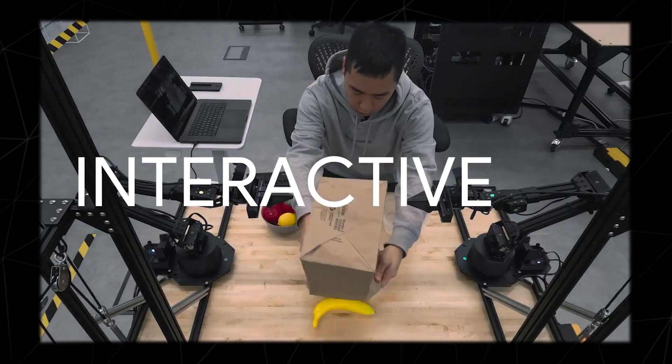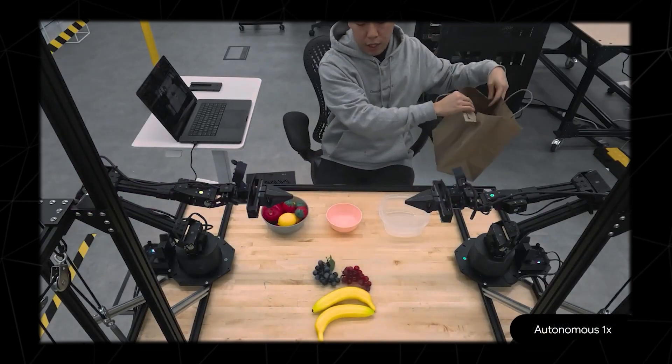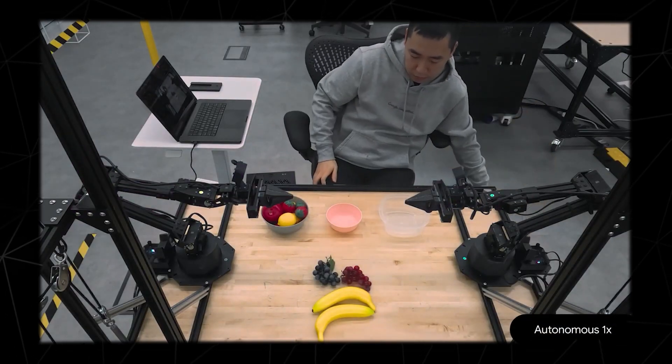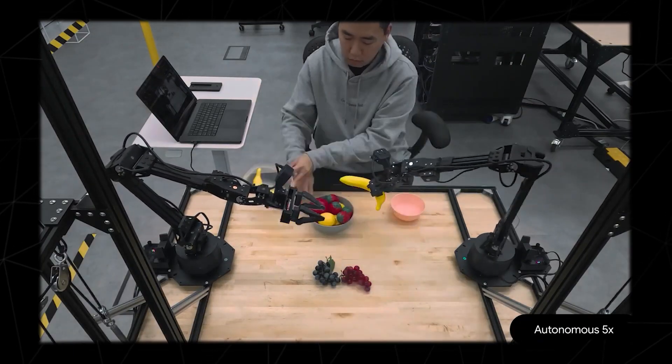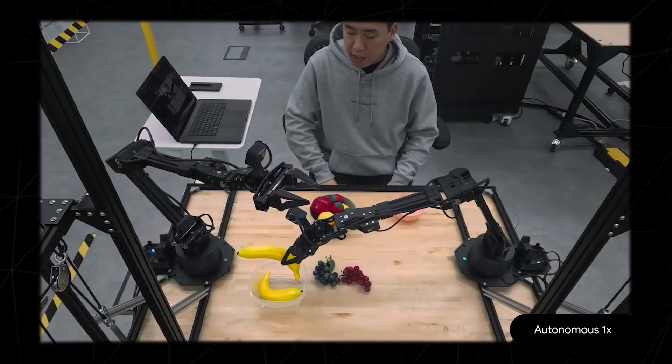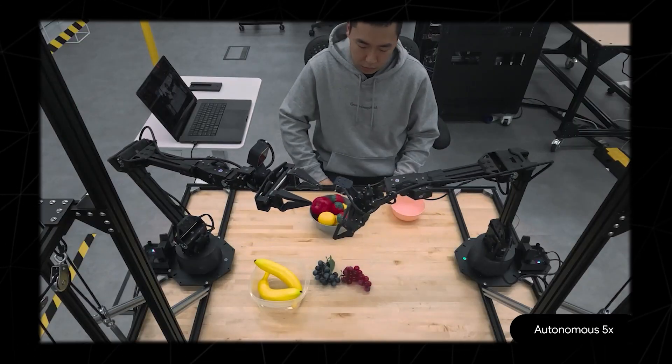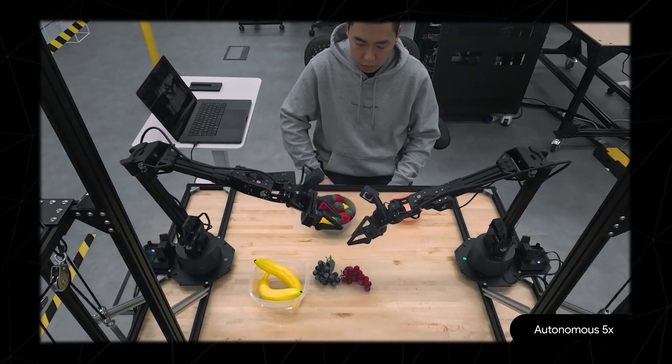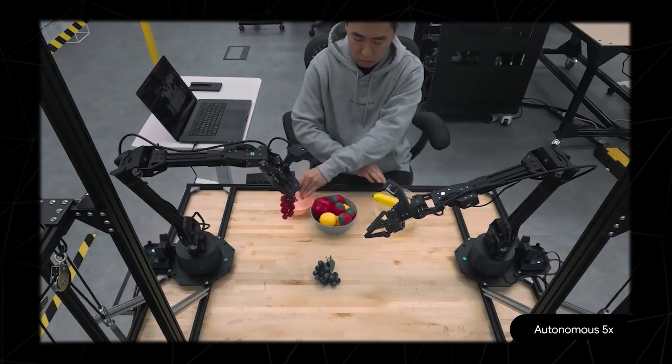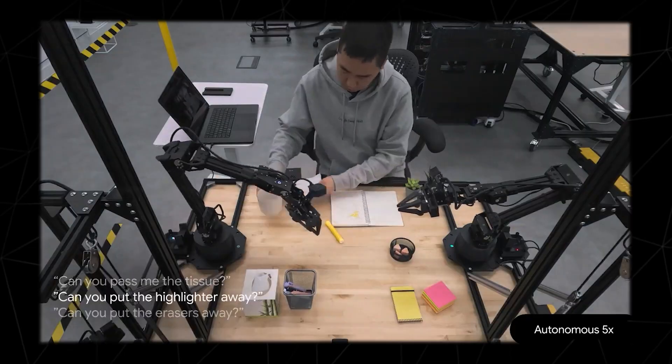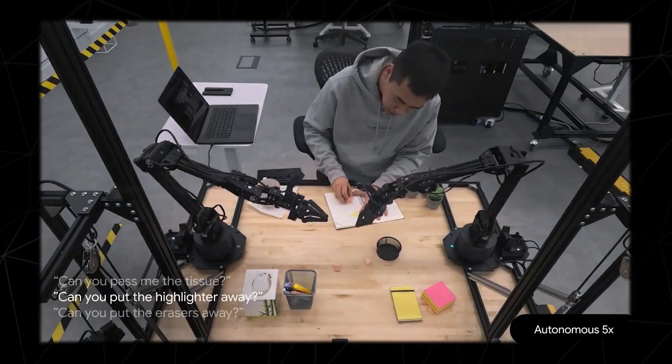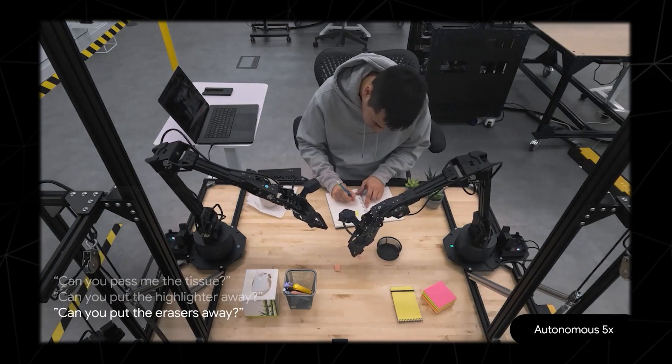Gemini Robotics is interactive. Can you put the bananas in the clear container? Notice how we move the objects and the model reacts and replans on the fly. Can you put the grapes in the clear container? Our model's low latency means it can respond live to rapidly changing conditions and instructions. This same model can generalize to all kinds of applications where you can collaborate with the robot live.